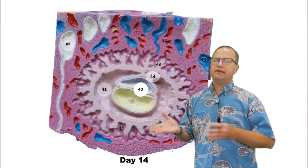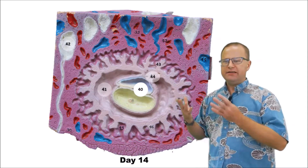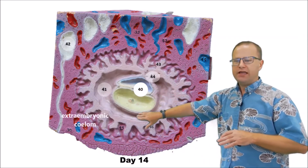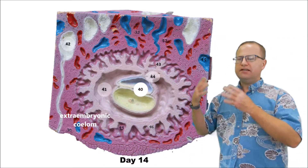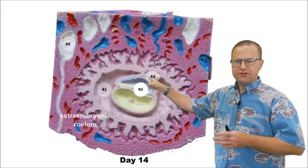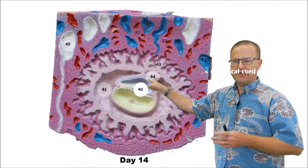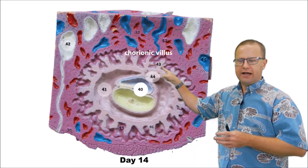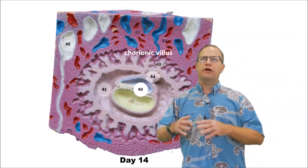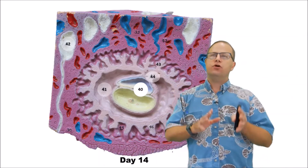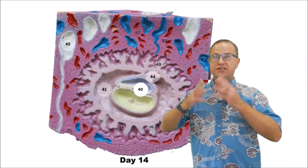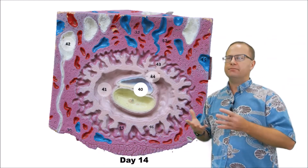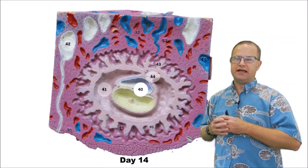A few days later in development, around day fourteen, the big difference is that the embryo is now surrounded by a very conspicuous extra-embryonic coelom — a coelom is just a cavity. We also have a developing umbilical cord going to the chorion, and the chorion has these little extensions called chorionic villi. The chorionic villi are embryonic in origin and are there to absorb nutrients from the mother's tissues and circulation. The chorionic villi are going to become the embryo's contribution to the placenta as it develops.